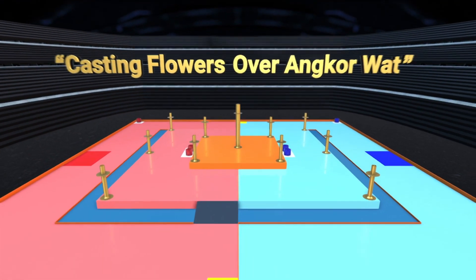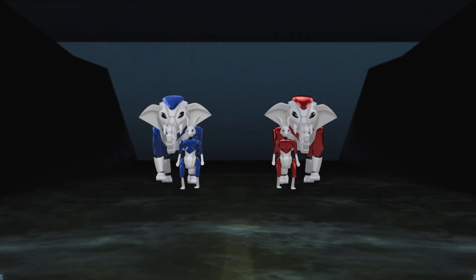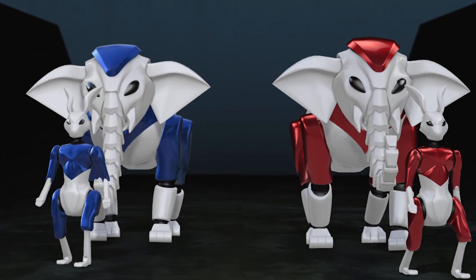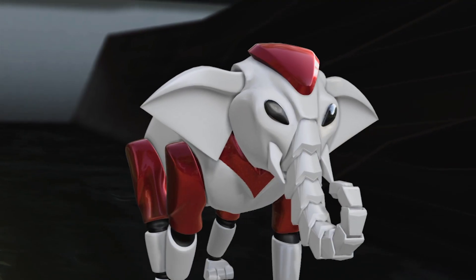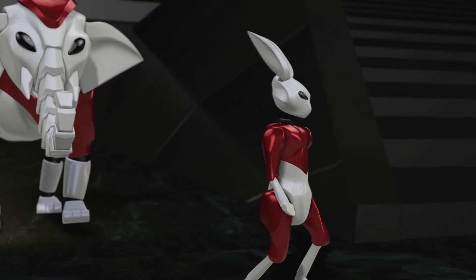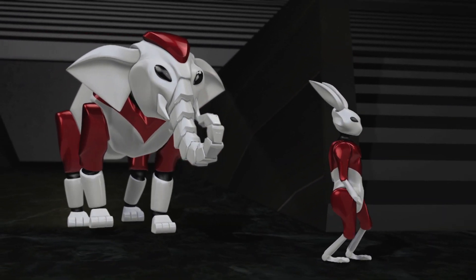The game will be participated by two teams, red team and blue team. Each team has two robots, namely elephant robots and rabbit robots. Both robots can be either manual or automatic.